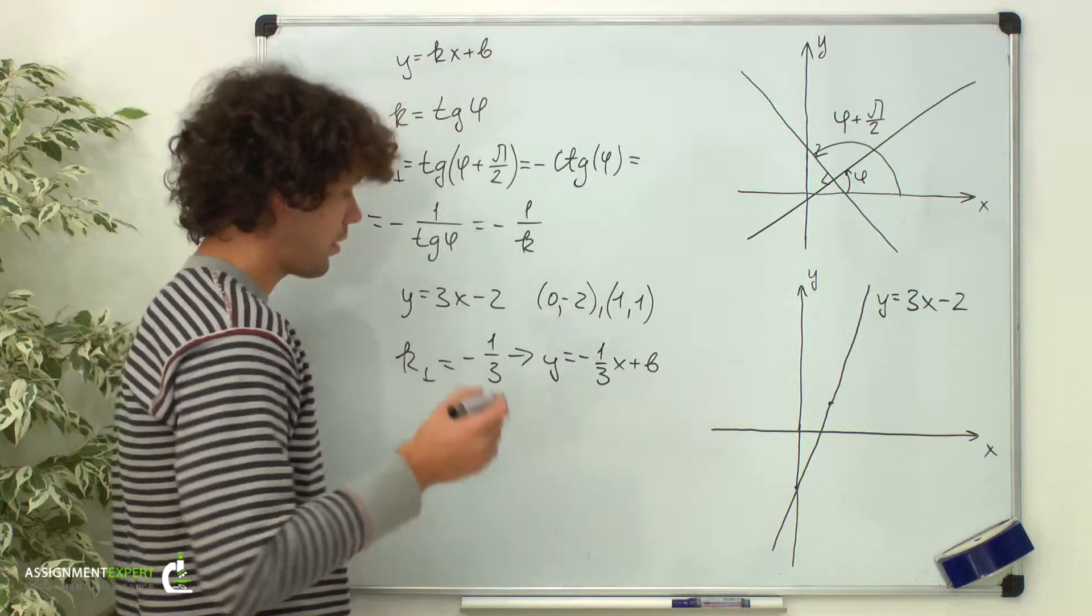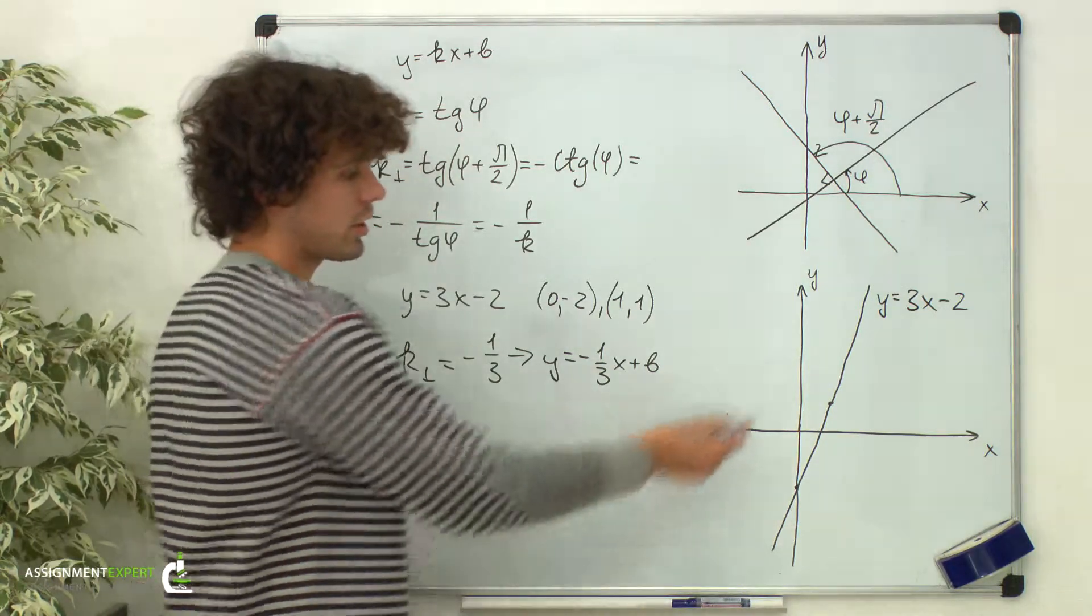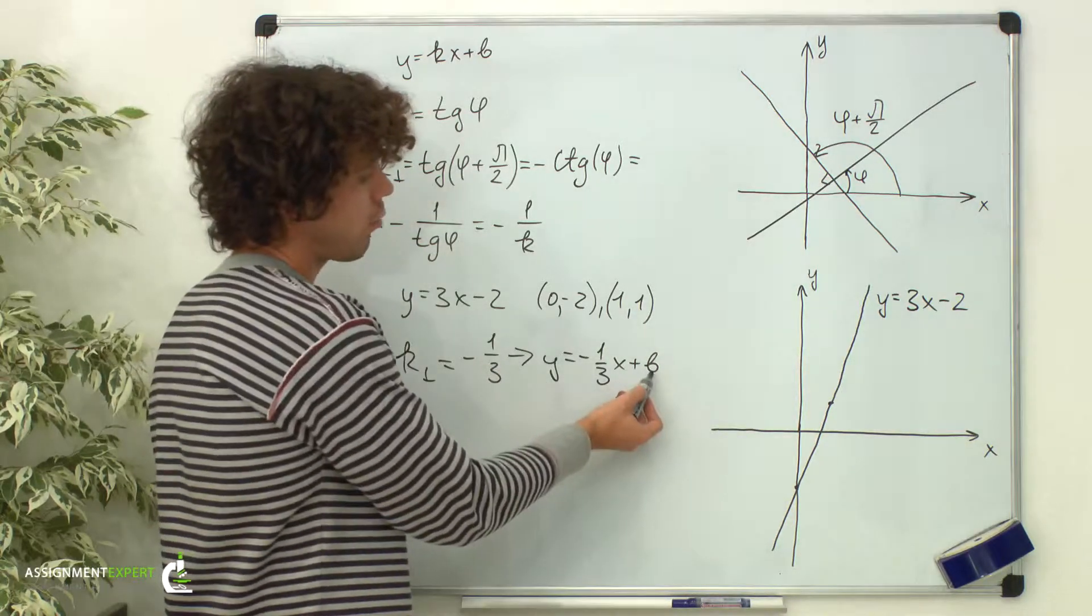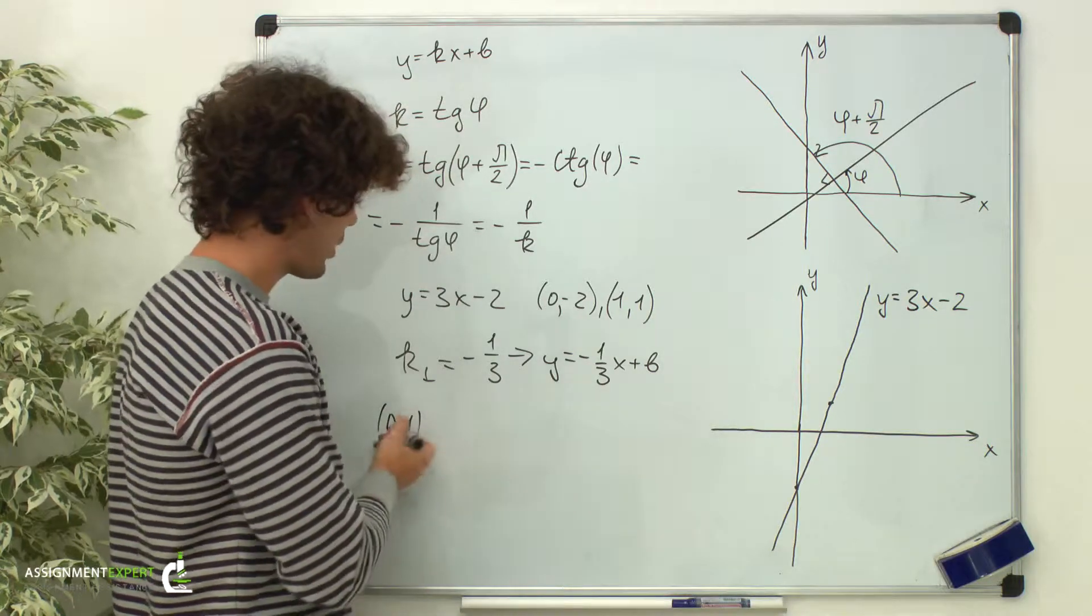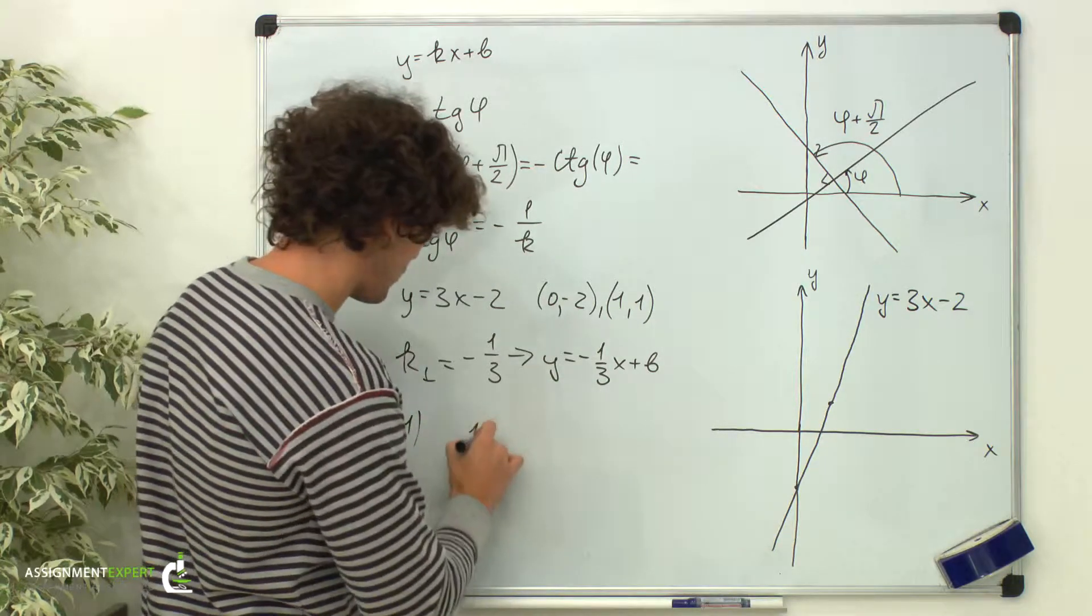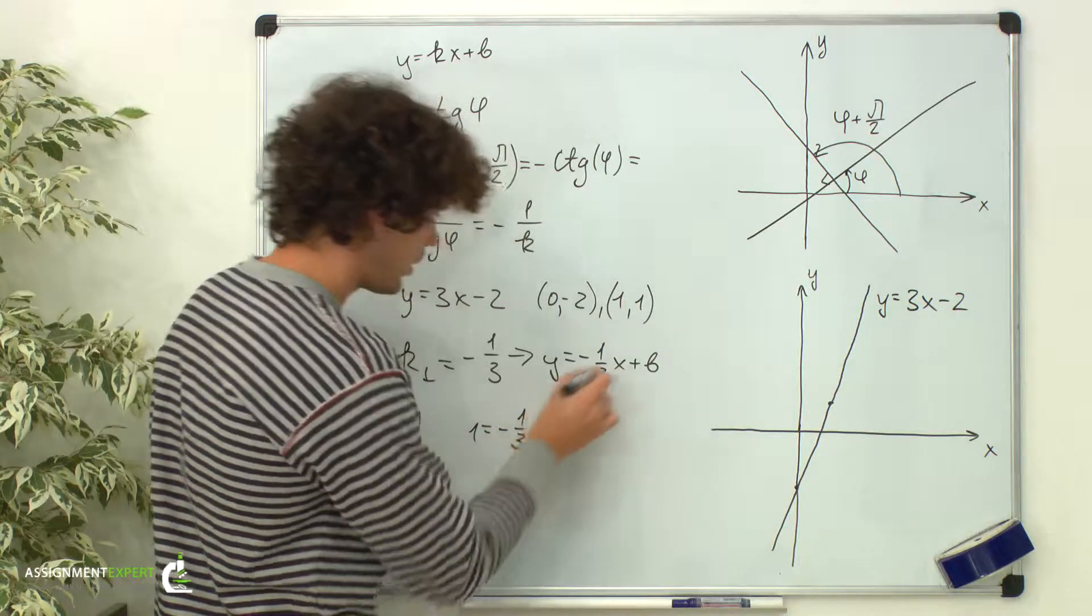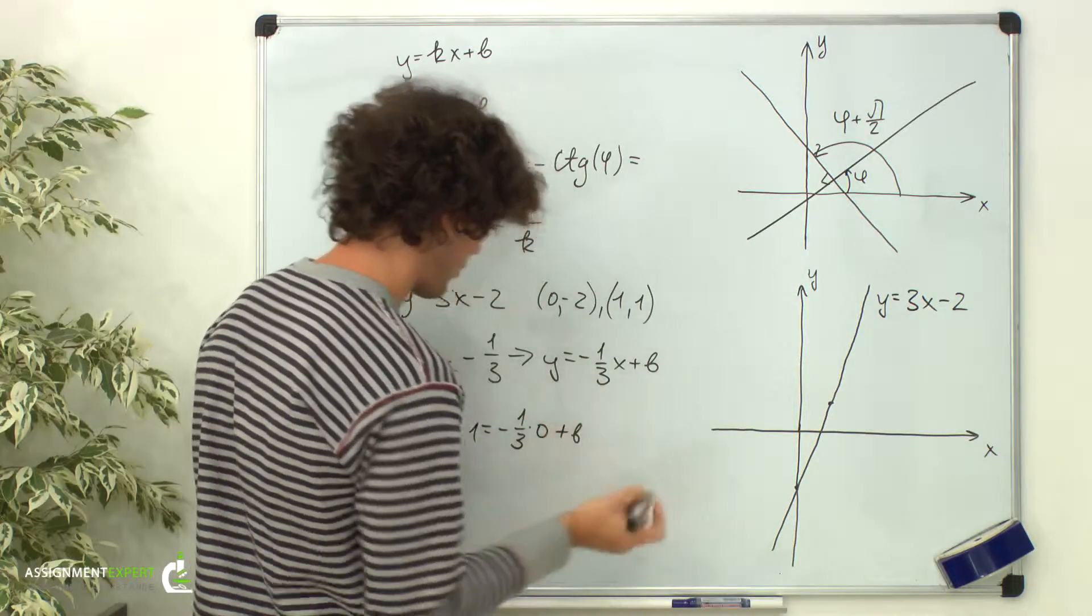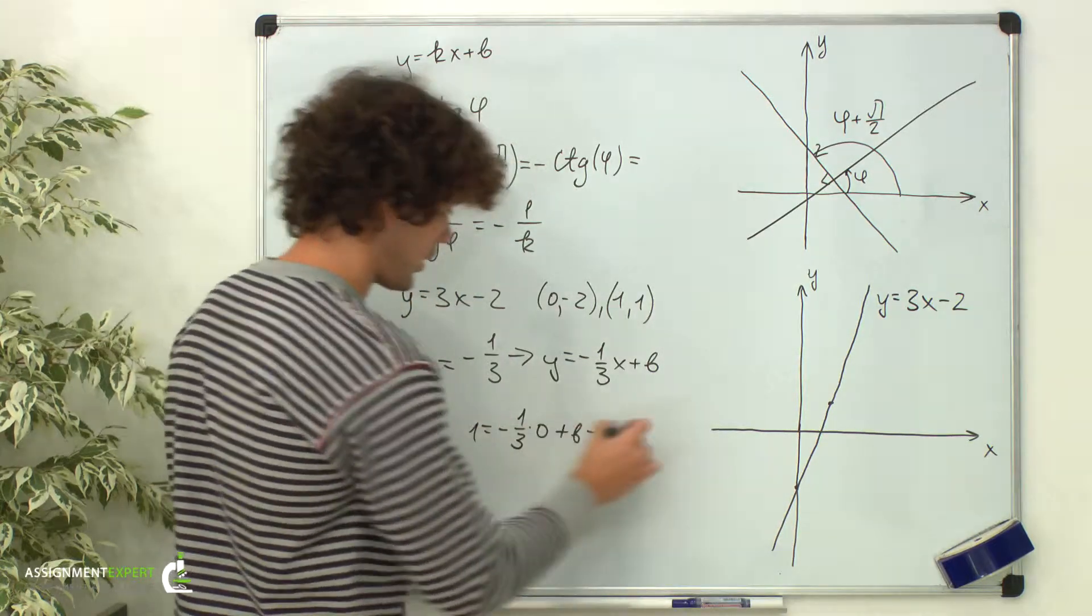Suppose we are also given the point 0 comma 1, which belongs to the line perpendicular to that one. Now we need to find the y-intercept, or b-parameter. For that, let's insert the coordinates of that point into the equation. y is 1 equals negative 1 third times x, which is 0, plus b. And here we obtain b equals 1.